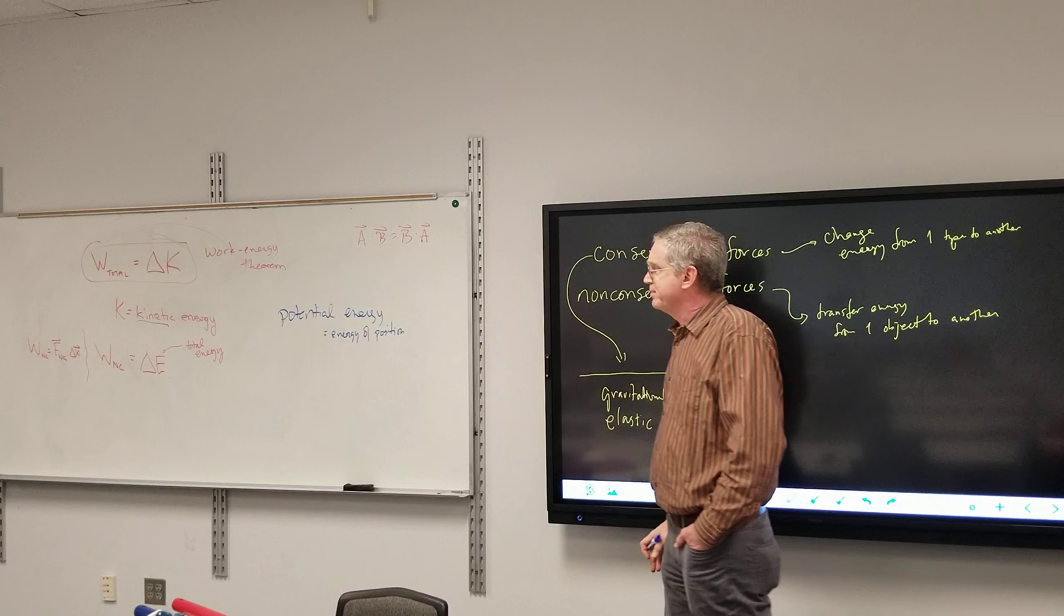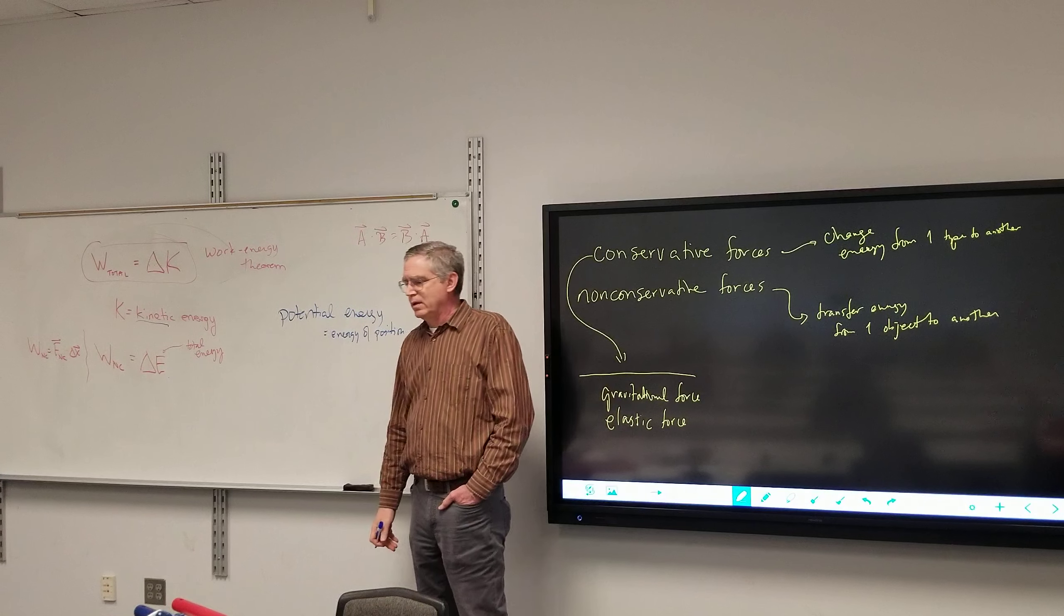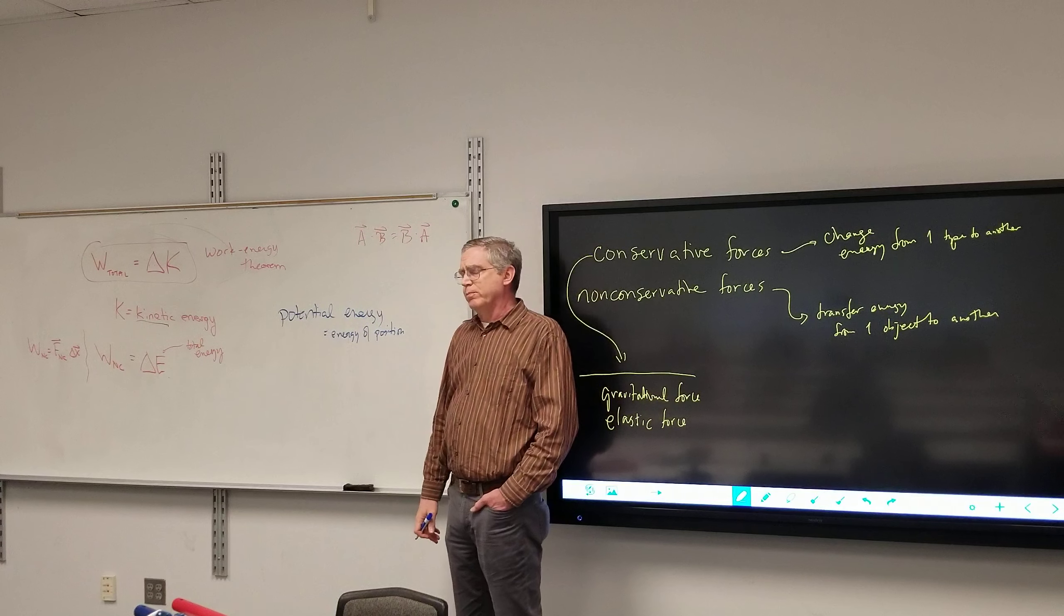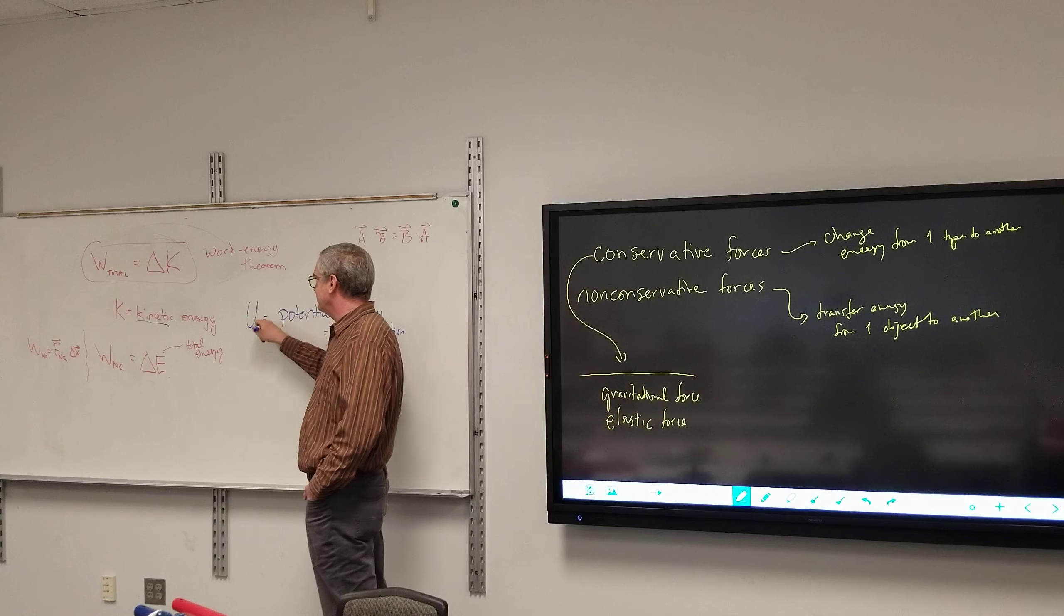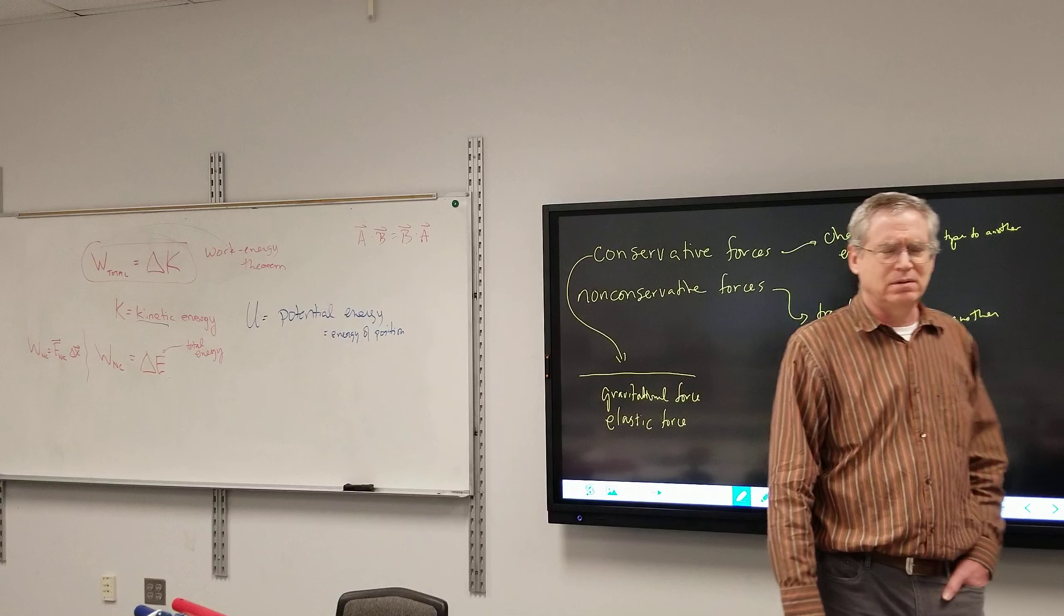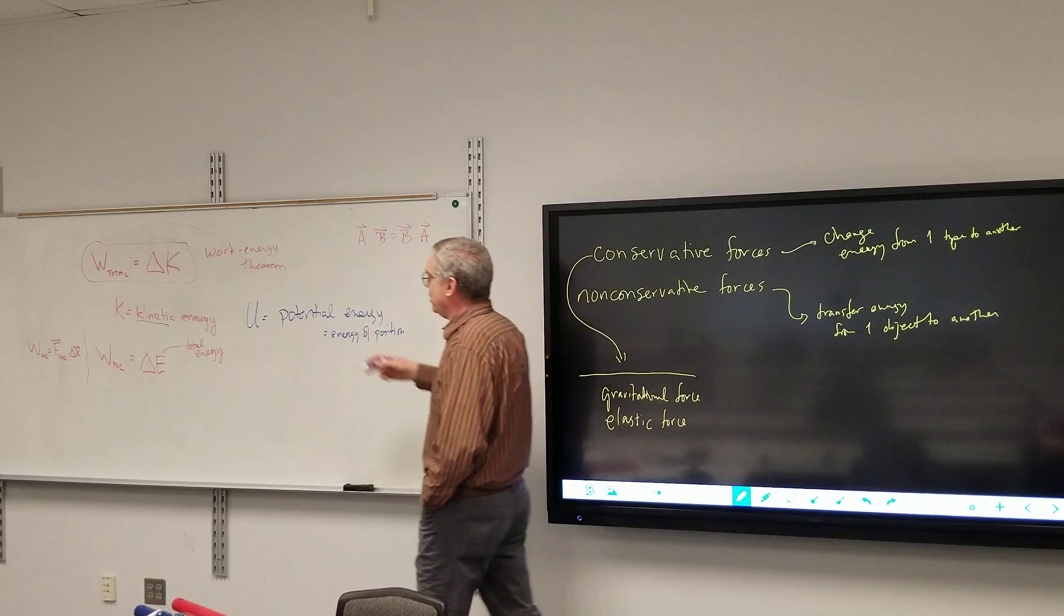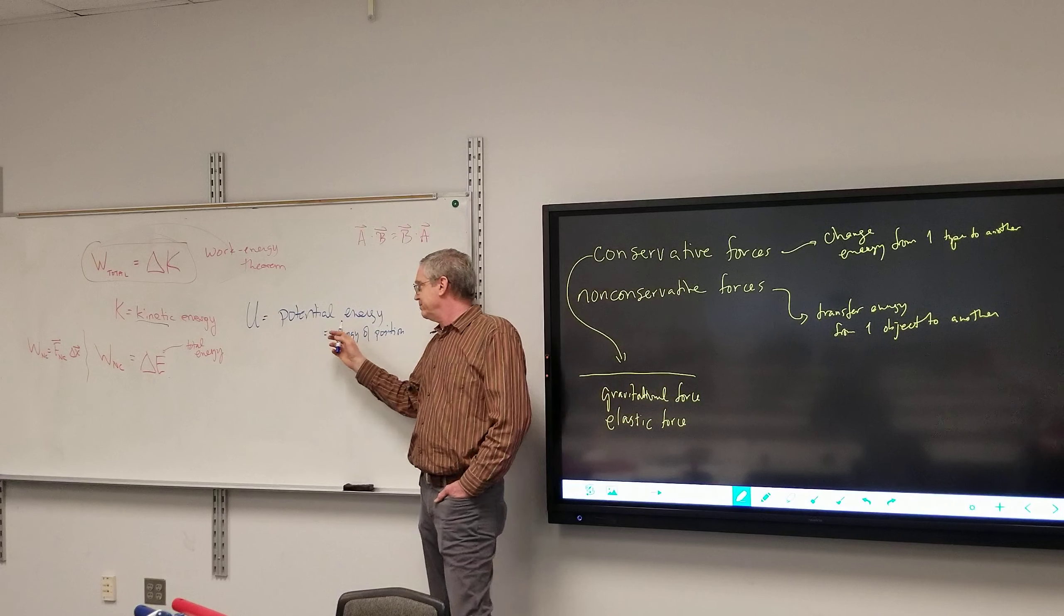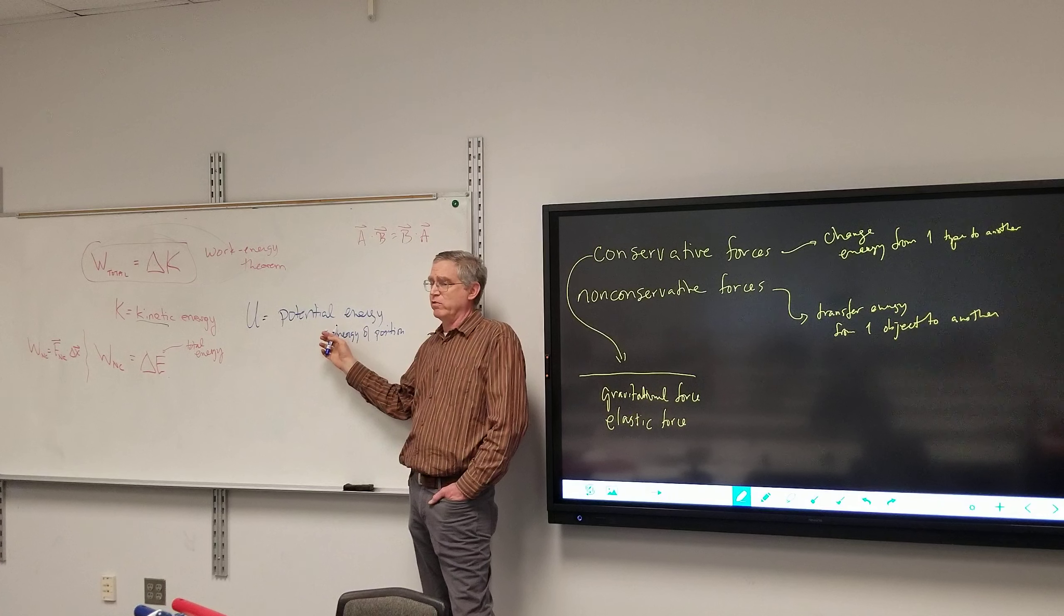Some textbooks will talk about it as the potential to do work, but I never cared for that definition. The symbol for potential energy, as you would expect, is capital U. I think some textbooks use PE. I will use capital U. So we have the energy of motion, we have the energy of position. In essence, how much work does it take to put an object into its current position from wherever potential energy is zero?